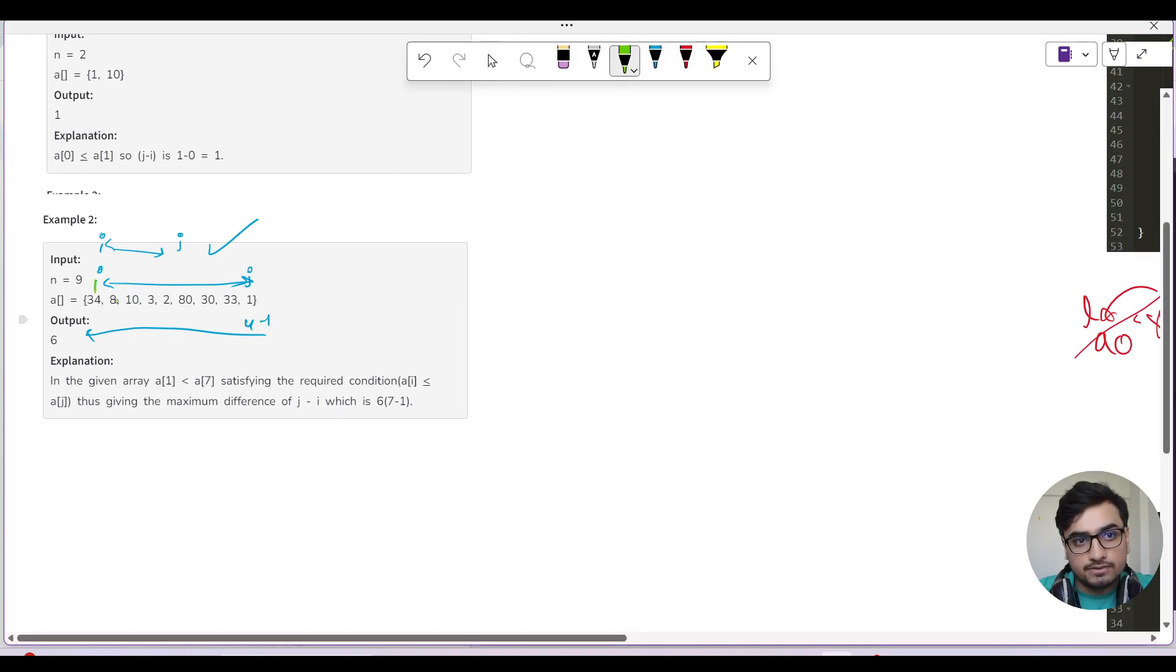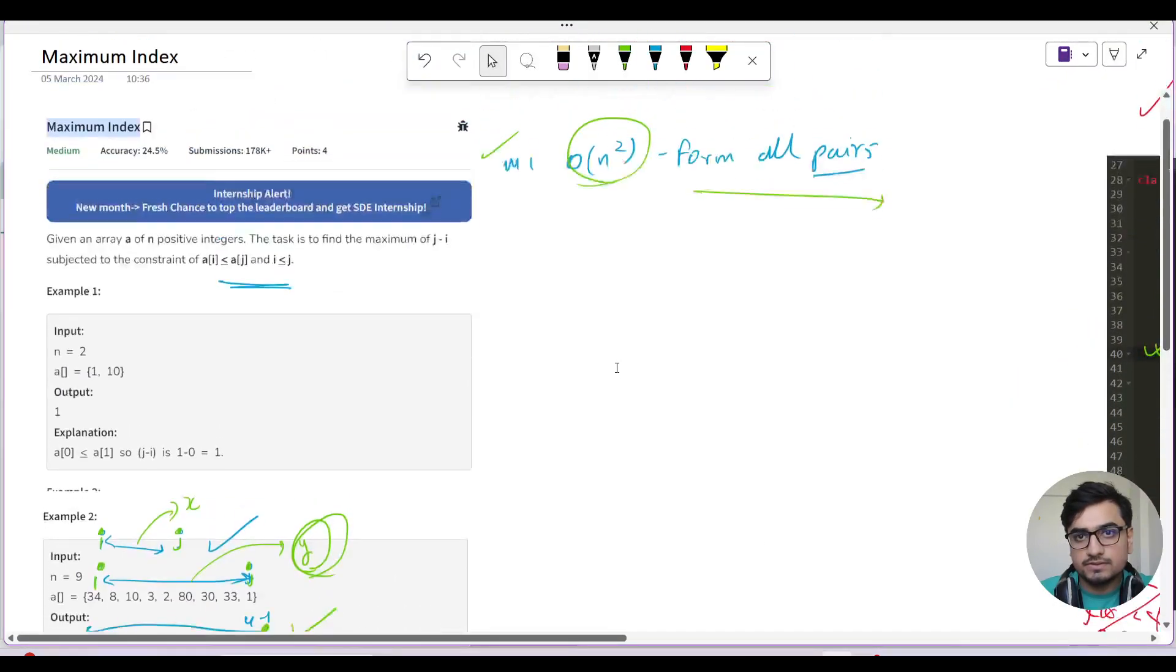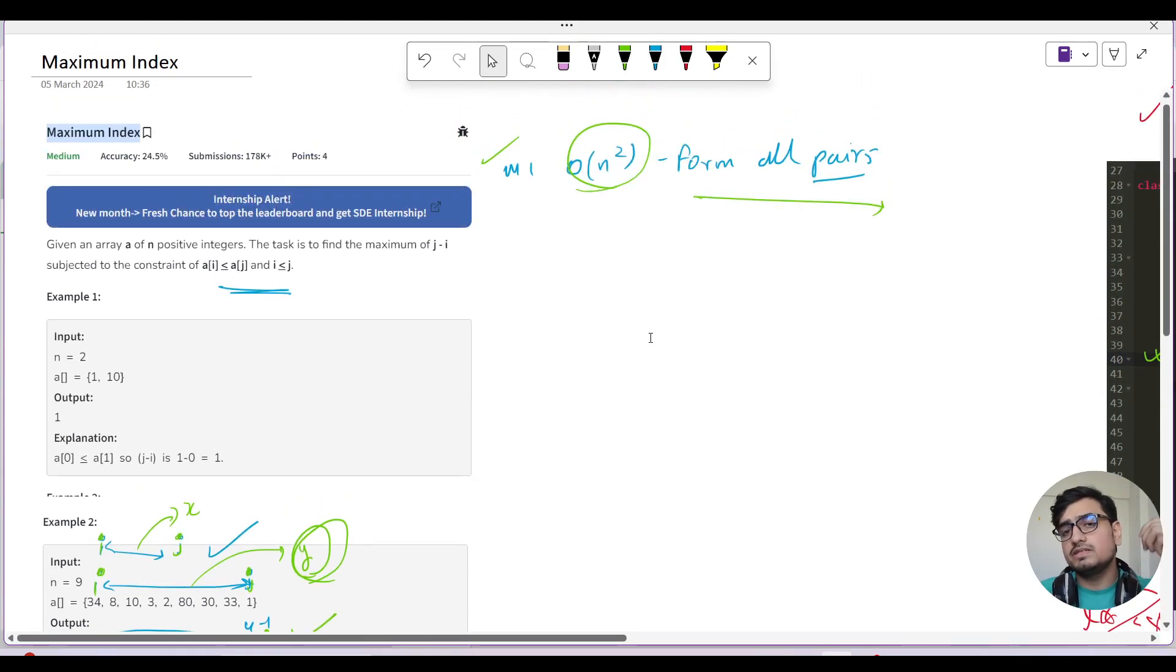Why are we iterating the second for loop from last and why are we using the break condition? We want maximum index, right? So let's say for this array, we have i at the first pointer and j at the last. If we have i at first and j somewhere in between, the difference with j at the end will definitely be larger because the distance between i and j is greater. That's why for the second loop we are always traversing from n minus 1, and if we have a possible answer, that would be our maximum possible answer and we break.